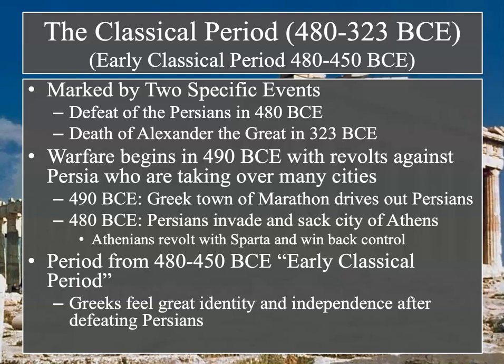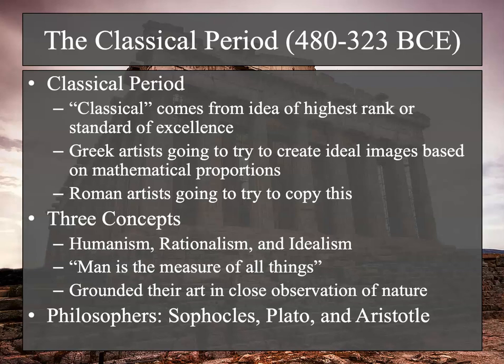In this early classical period, the Greeks feel a great sense of identity and independence after defeating the Persians. They feel powerful and that they've taken back their city. The term 'classical' comes from the idea of the highest rank or standard of excellence. Greek art creates ideal images based on mathematical proportions, and Roman art copies this. Key elements include humanism, rationalism, and idealism — 'Man is the measure of all things' — grounded in close observation of nature. Philosophers such as Sophocles, Plato, and Aristotle are central to this period.